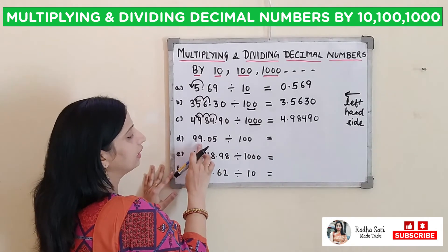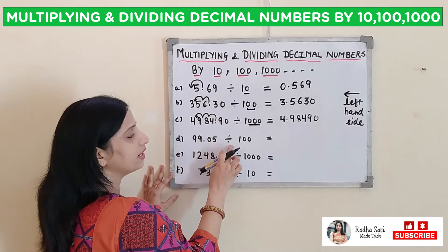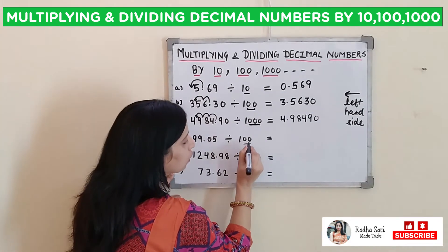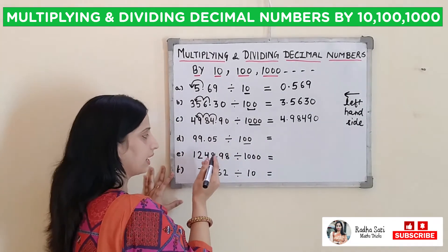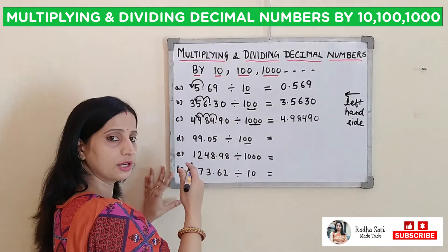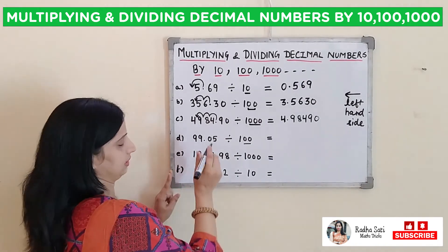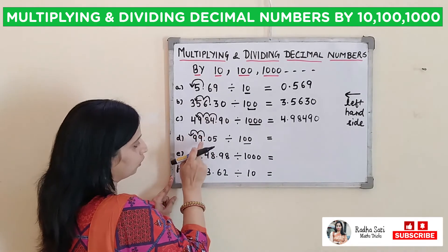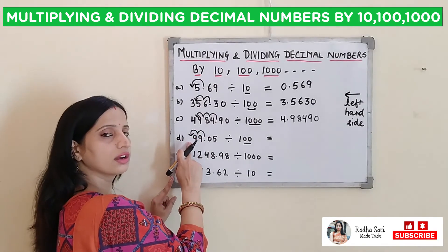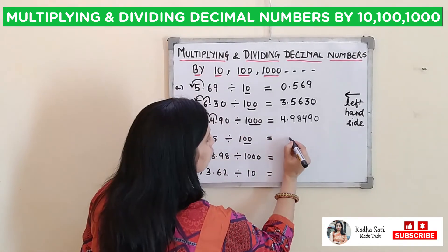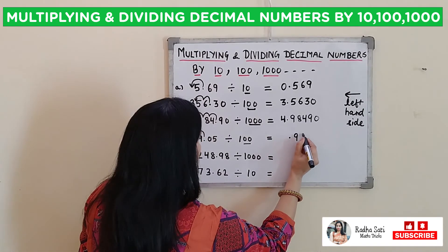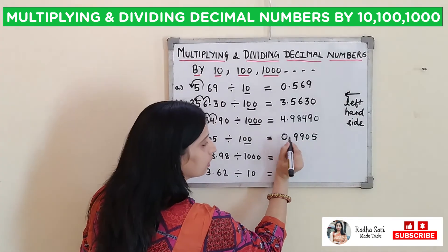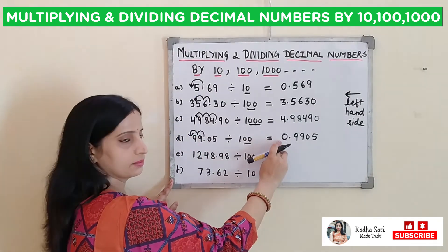Next one: 99.05 divided by 100. In 100 there are 2 zeros. So again, the decimal will shift to the left side by 2 places — 1 and 2. Now the decimal will come before 9, giving us 0.9905. We will put a zero here before the decimal.